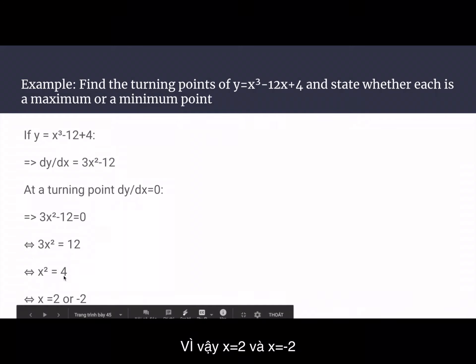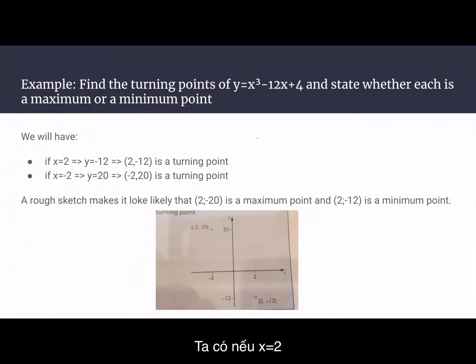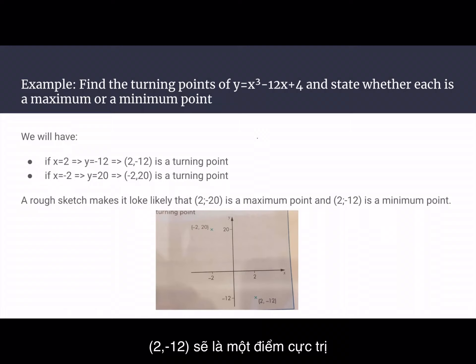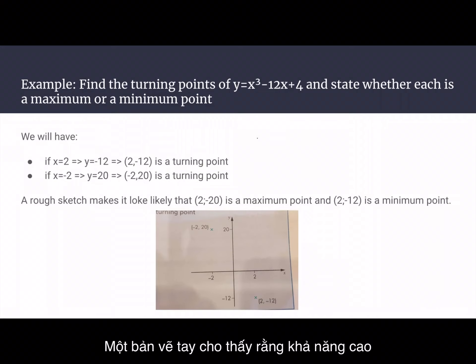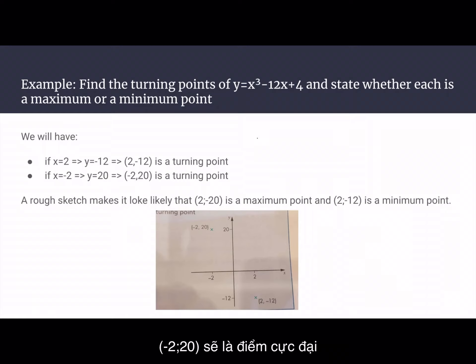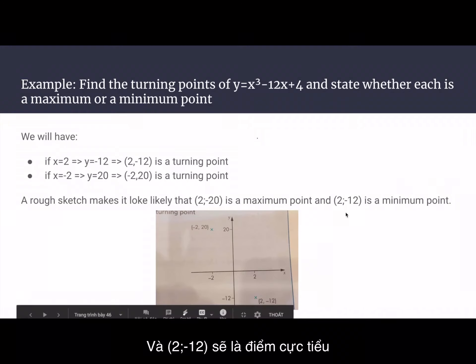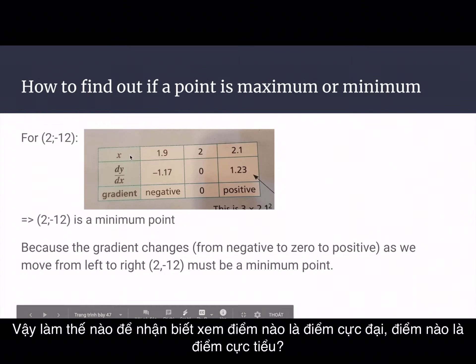Solving gives x equals 2 or x equals minus 2. When x equals 2, y equals minus 12, giving the turning point (2, -12). When x equals minus 2, y equals 20, giving the turning point (-2, 20). A rough sketch suggests that (2, -12) is a minimum point and (-2, 20) is a maximum point.